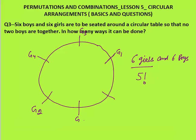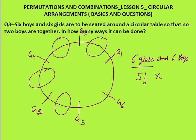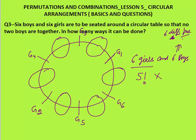Now for the 6 boys: we need to place them such that no two boys are together. After placing the girls, there are 6 gaps between them in the circle — 6 different positions for the boys. Remember, only for the first person are all positions the same; for all other persons all positions are different. So 6 boys can be arranged in those 6 different positions in 6 factorial ways. That is the final answer: 5 factorial × 6 factorial.